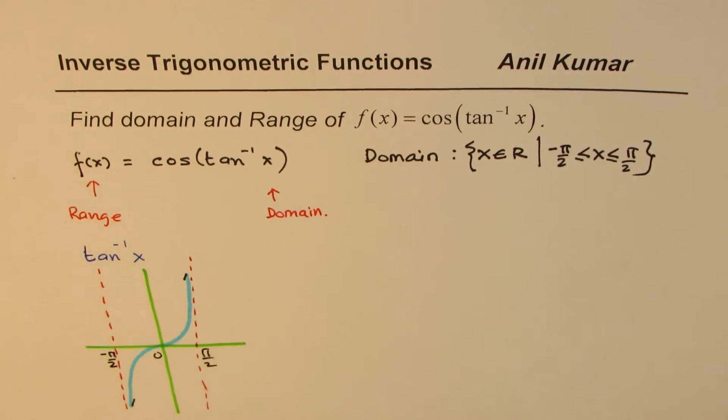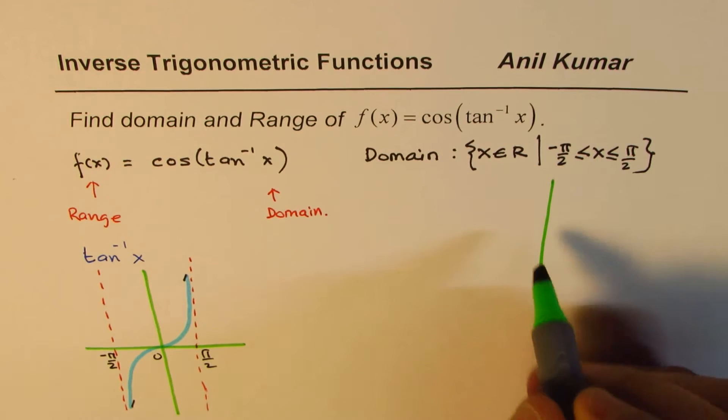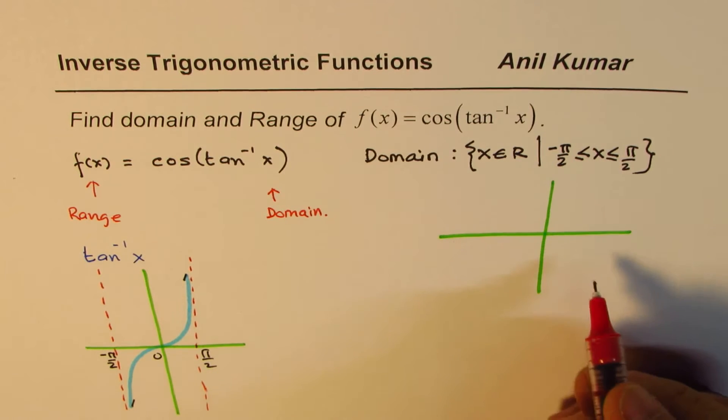The total range of cos is from -1 to +1. But if you look into this domain, let me again sketch another coordinate system.